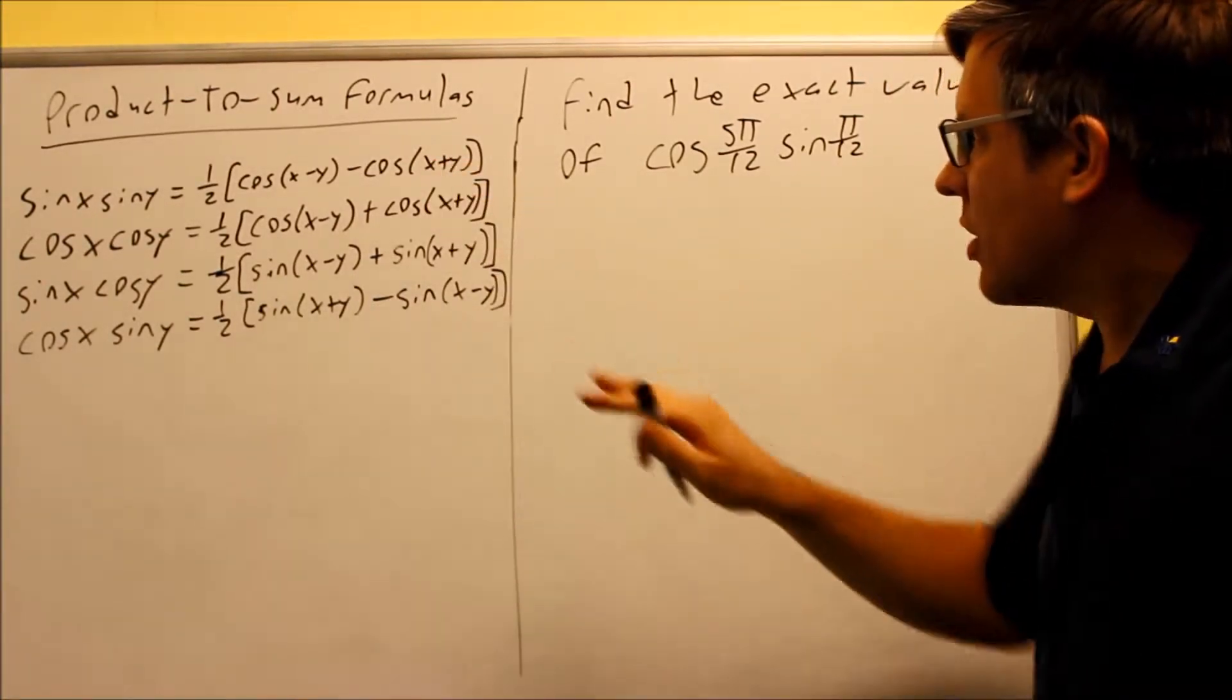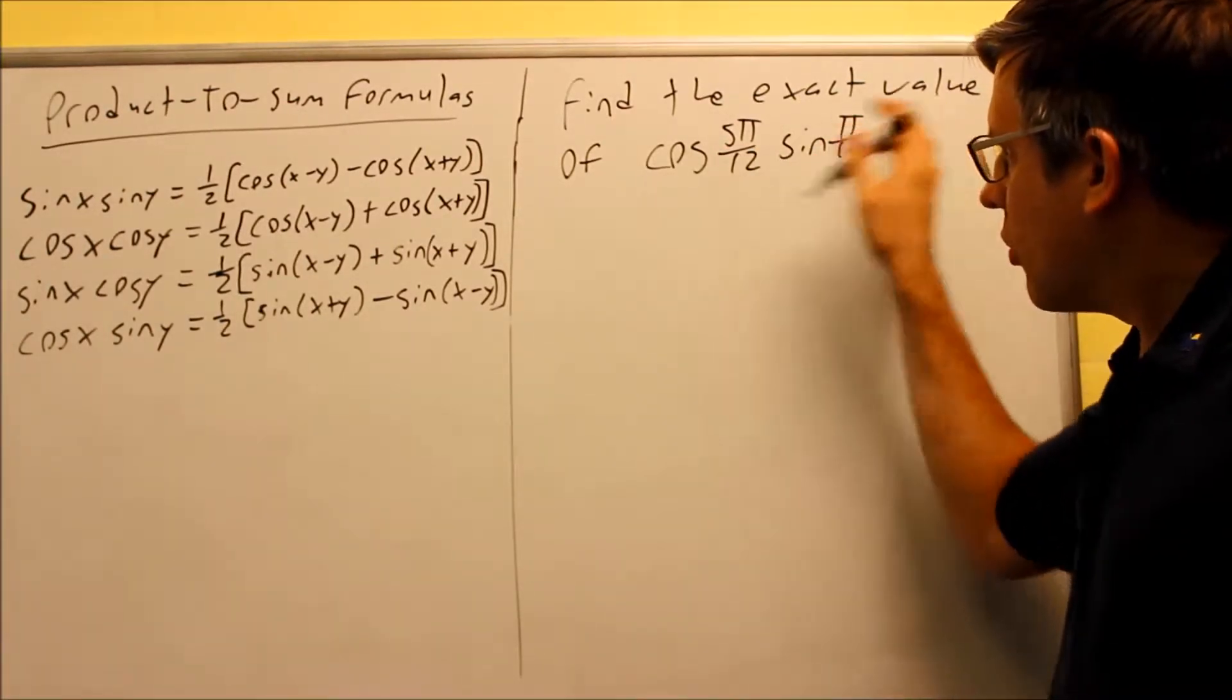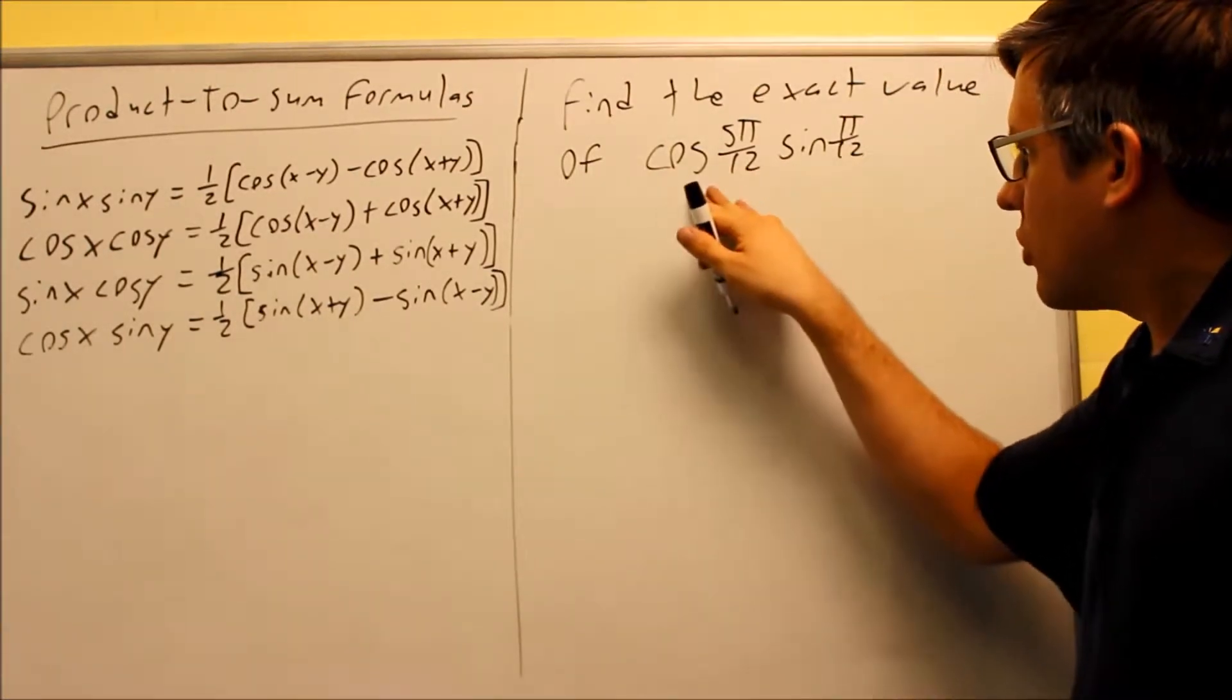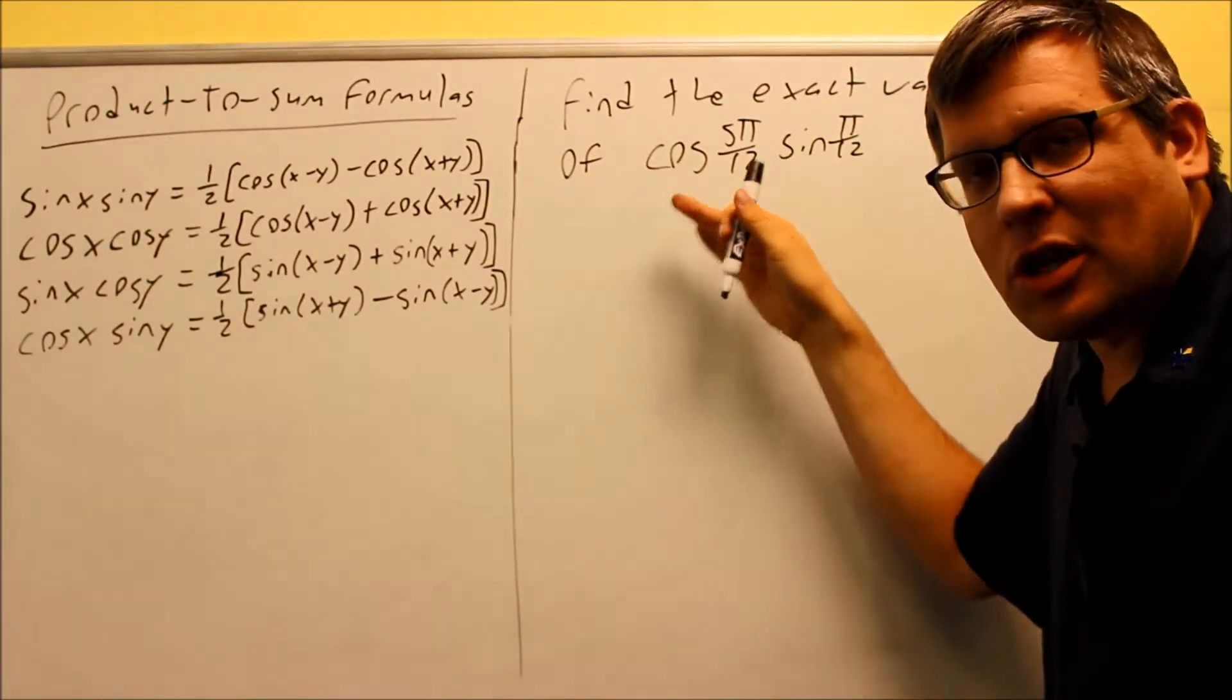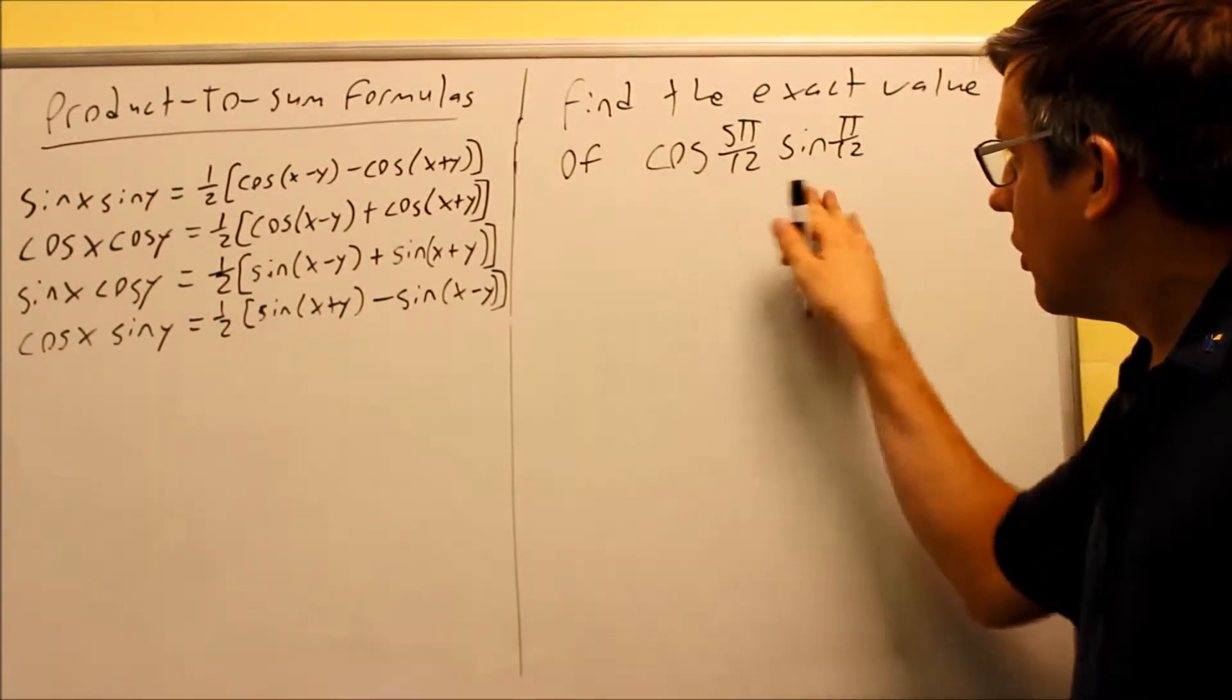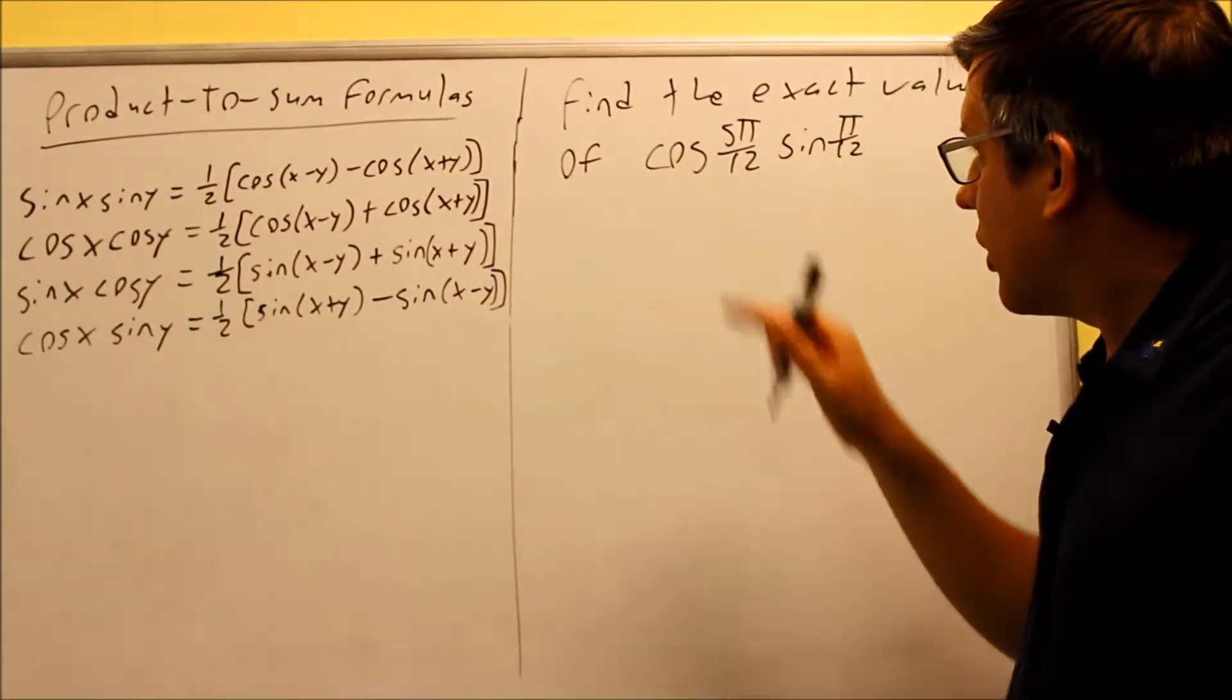However, by using the product-to-sum formulas, this does allow me to find the exact value because in the course of using the formula, I'll actually get something I can get off my table. This allows you to do certain kinds of products. The problem has to be engineered in a certain way to allow you to get an angle that's on your unit circle, but in certain cases you are able to get an exact value, and that's one case here.